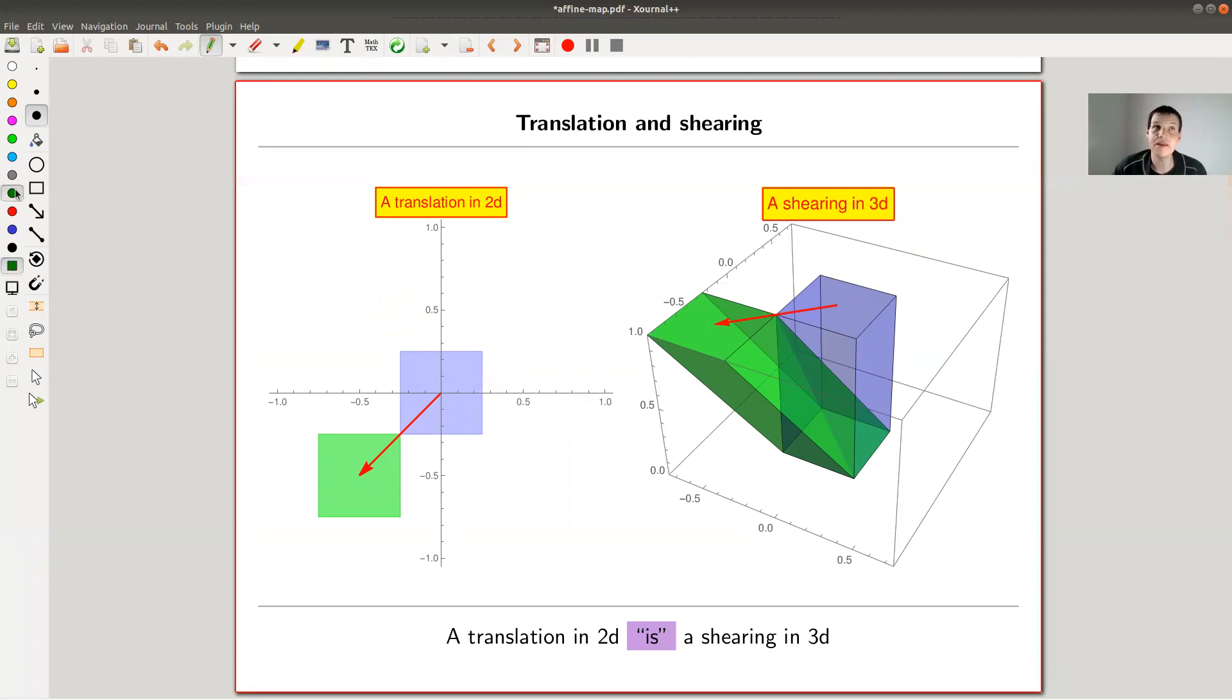So the easiest operation that comes to mind is you have some geometric object like a square and it lives in 2D and you just move it. You translate it somewhere.